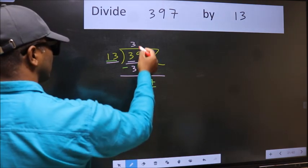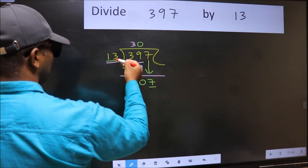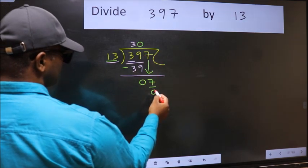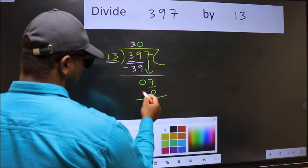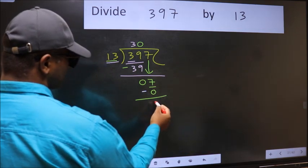So what we should do is we should take 0. So 13 into 0, 0. Now we should subtract. 7 minus 0, 7.